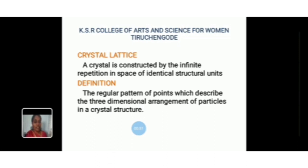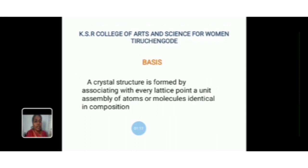This geometrical pattern is the crystal lattice, or simply the lattice. The points are called lattice points. The crystal lattice is defined as the regular pattern of points which describes the three-dimensional arrangement of particles in a crystal structure. Then, basis — a crystal structure is formed by associating with every lattice point a unit assembly of atoms or molecules identical in composition. This unit assembly is called the basis.